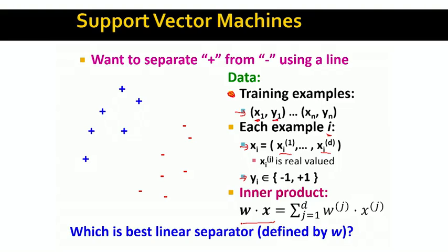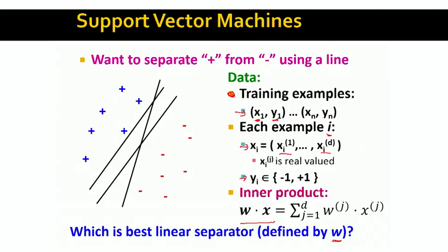Now the question is, what is the best line that separates pluses from minuses? The line is defined by the weight vector w. In this small example, there are many possible lines that separate pluses and minuses, so the question is which among these three different lines is the best one.